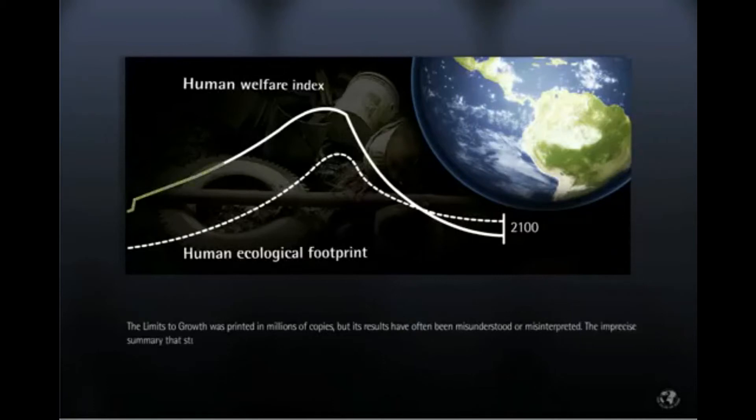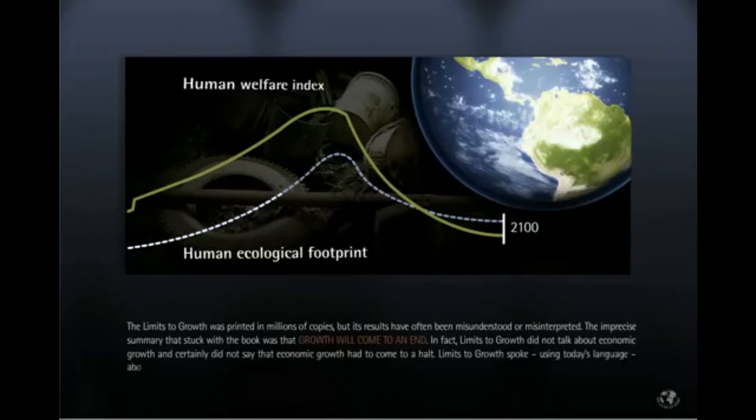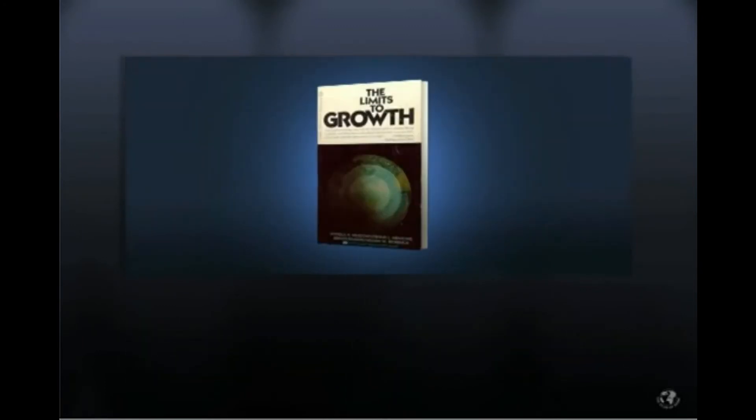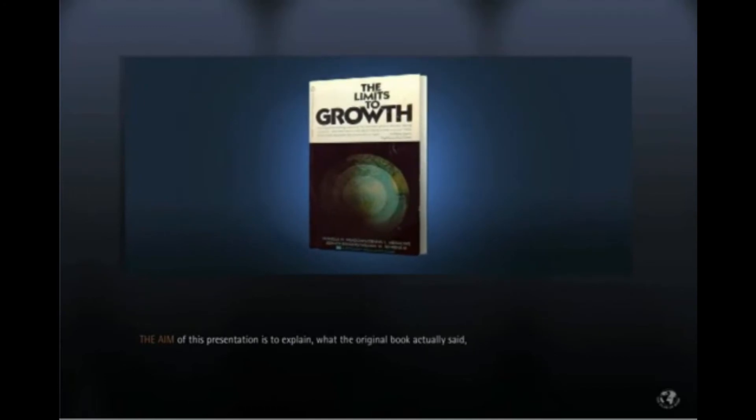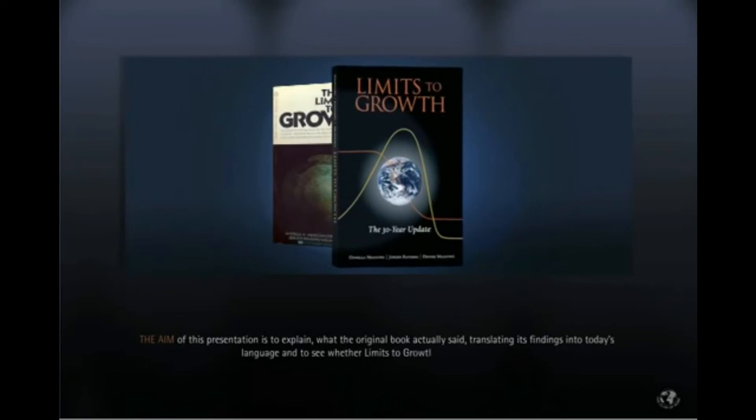The imprecise summary that stuck with the book was that growth will come to an end. In fact, Limits to Growth did not talk about economic growth, and certainly did not say that economic growth had come to a halt. Limits to Growth spoke, using today's language, about growth in the human ecological footprint, in growing physical impacts on a finite planet. The aim of this presentation is to explain what the original book actually said, translating its findings into today's language, and to see whether Limits to Growth still had relevance.